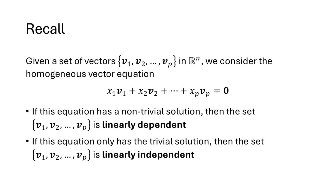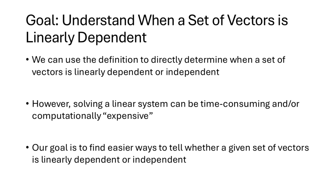Recall the definition of linear dependence from lecture 15. Given a set of vectors v1 through vp in Rn, we consider this homogeneous vector equation, and we know that equation always has at least the one solution where all the x variables equal zero. If the equation has a non-trivial solution, then the set v1 through vp is linearly dependent. If the only solution is the trivial one, then the set is linearly independent. Our goal for this lecture is to determine when a set is linearly dependent or independent without actually doing the row reduction process from lecture 15.